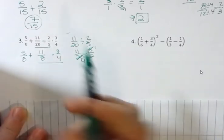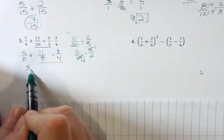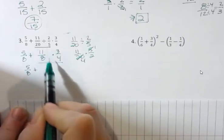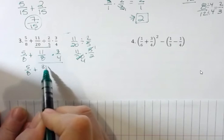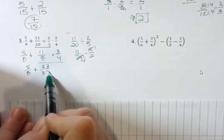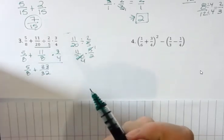I can't cross cancel anything here, so I have 5 over 8 plus 11 times 3 is 33, and 8 times 4 is 32. So now I have to add those two things together.